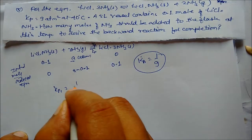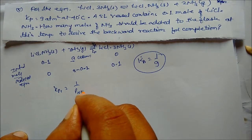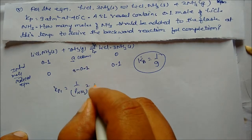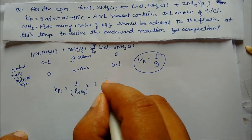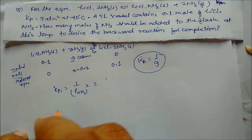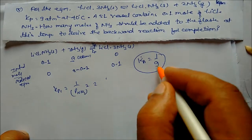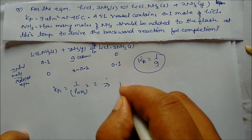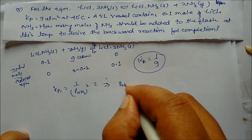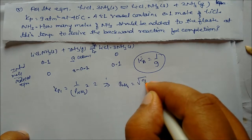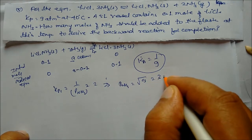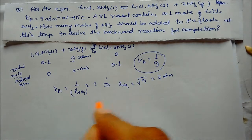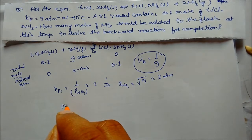Since Kp1 = 1/(partial pressure of NH3)² = 1/9, the partial pressure of NH3 at equilibrium = √9 = 3 atm. Using the ideal gas equation, moles of ammonia at equilibrium n = PV/RT = (3 × 5)/(0.0821 × 313) = 0.5837 moles.